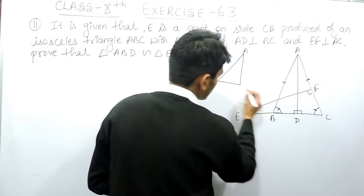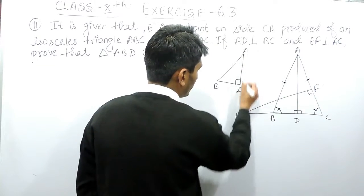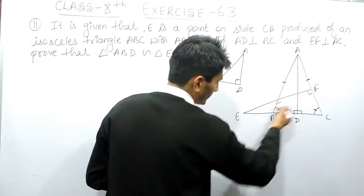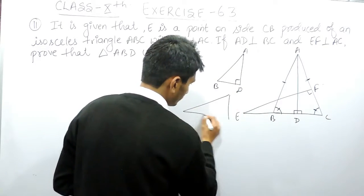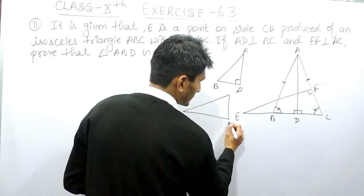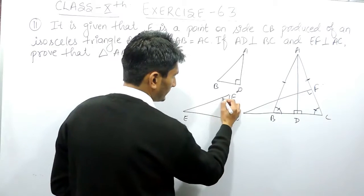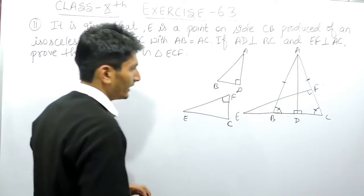And if I make triangle CEF, this must look like this, where this is C, this is F, and this is E, and this must be 90 degrees which is given to you. You need to prove that two angles of this triangle are equal to two angles of this triangle.